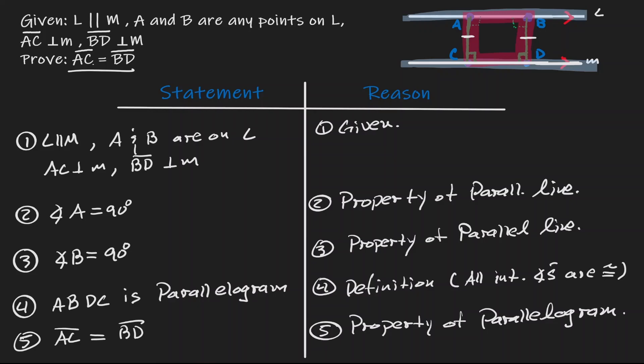Notice that AC is a perpendicular line — that's the distance between two lines. And DB is another perpendicular line — that's also the distance between two lines. They have the same length, so we can claim that the lines are always going to be equidistant to each other.